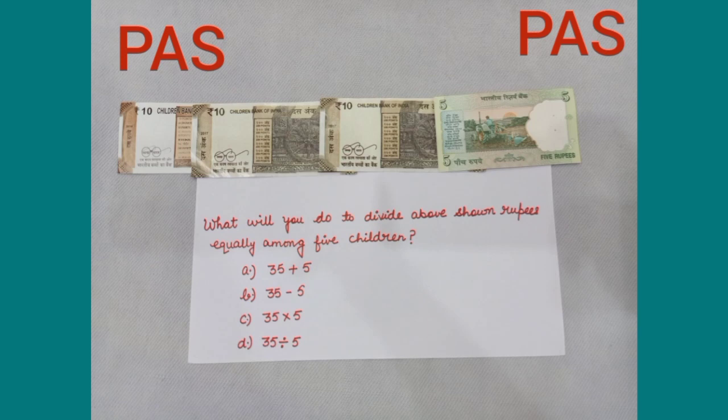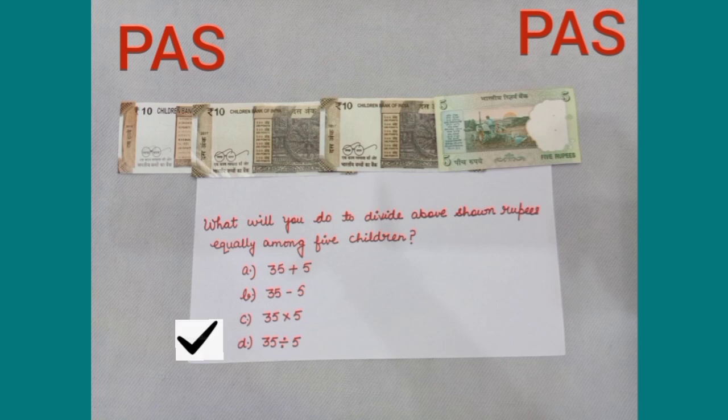Now, the question for practice: what will you do to divide the above shown rupees equally among 5 children? Students, you can see there are 35 rupees and we have to divide these 35 rupees among 5 children. Option A, 35 plus 5 — not correct. Option B, 35 minus 5 — not correct. Option C, 35 multiplied by 5 — not correct. The right answer is option D, that is 35 divided by 5.